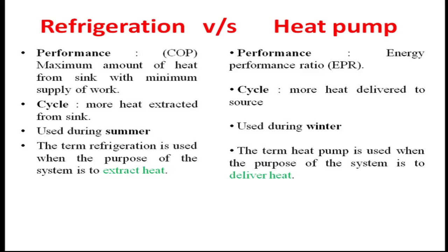What is the difference between a refrigeration system and a heat pump? The performance of a refrigeration system is called COP — coefficient of performance — which is the maximum amount of heat removed from the sink with minimum supply of work. The sink is the body which is required to be cooled. The target of the refrigeration system is to produce a cooling effect, whereas the reverse is the case with the heat pump.